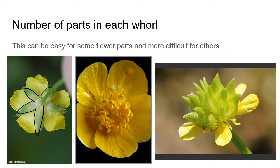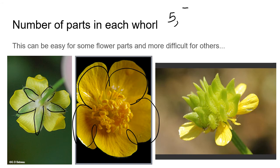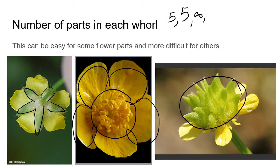For this ranunculus, counting the parts: we have five sepals in the calyx and five petals in the corolla. Getting to the stamens, if there are ten or more it's simply recorded as 'many.' The gynoecium here — the plant is in a kind of female phase, having already made fruits evolved from the carpels — also has many, more than ten.